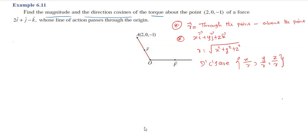About the point, we have the point A at (2, 0, 0, -1). Of the force 2i-cap plus j-cap minus k-cap, whose line of action passes through the origin. The acting point is A, based on the force at the origin.